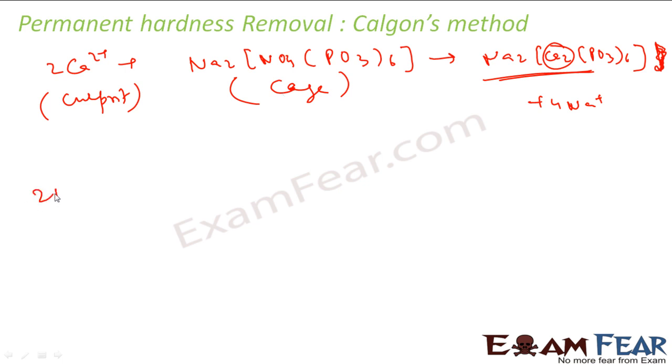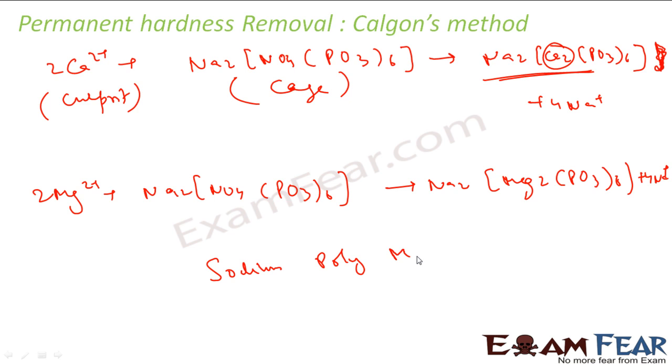Same thing for magnesium you can do. I have 2Mg2+. Same thing I will add, that is sodium polymetaphosphate Na2[Na4(PO3)6], and it becomes Na2[Mg2(PO3)6] plus 4 Na+. This is like a cage where these culprits which cause the water to be hard are trapped. Please note it doesn't precipitate; it is soluble in water.